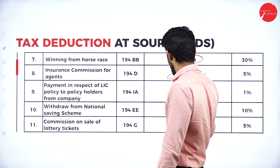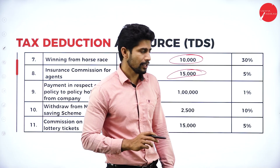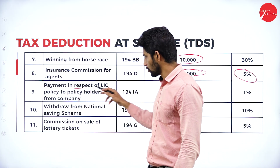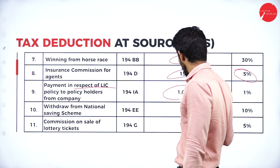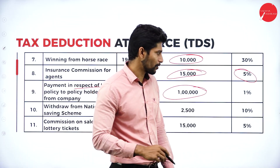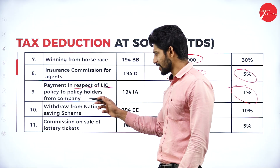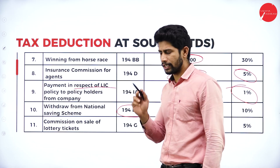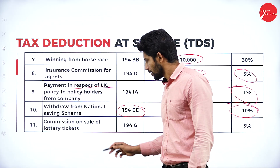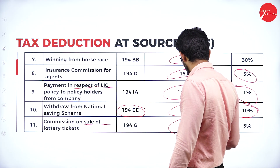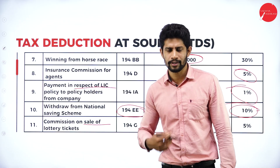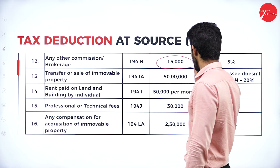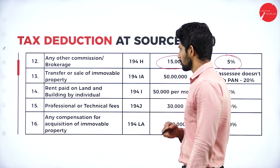For insurance commission for agents: up to 15,000 rupees no TDS; more than 15,000, five percent TDS is deducted. For payment in respect of an LIC policy: up to one lakh rupees no deduction; more than one lakh, one percent TDS. For withdrawal from the national savings scheme (NSC): up to 2,500 rupees no TDS; more than that, 10 percent. For commission on sale of lottery tickets and any commissions or brokerage: up to 15,000 rupees no TDS; more than 15,000, five percent TDS.